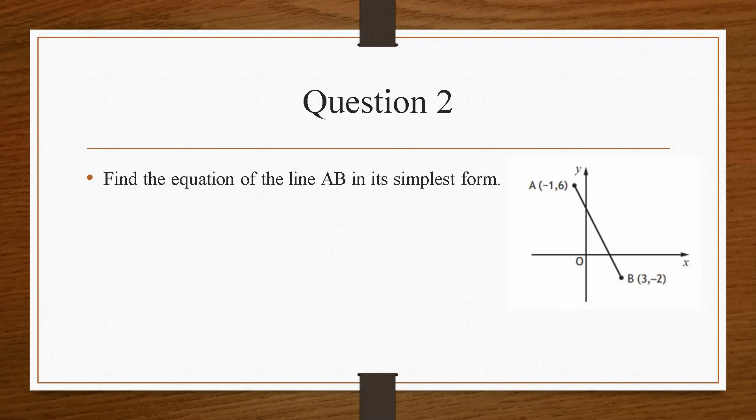So question number 2 gives us a straight line, A B, and it gives us the two coordinates, A which is minus 1, 6, and B which is 3, minus 2.